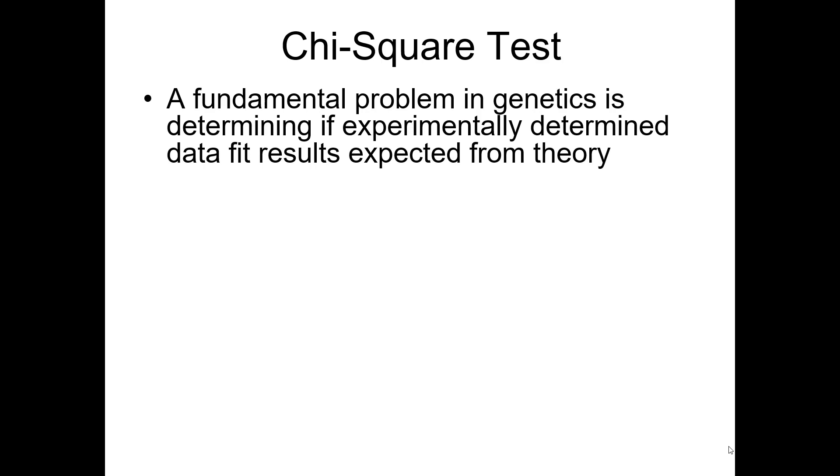To determine if a trait is inherited as expected, we need to run a statistical test. That's what the chi-square test is designed for. A fundamental problem in genetics is trying to figure out if your results from your experiment fit the theory, if your data fits what you expected.